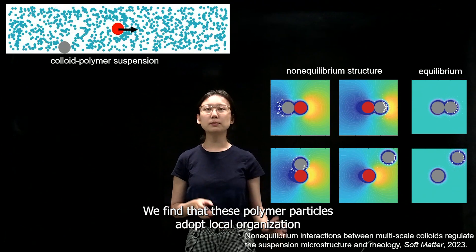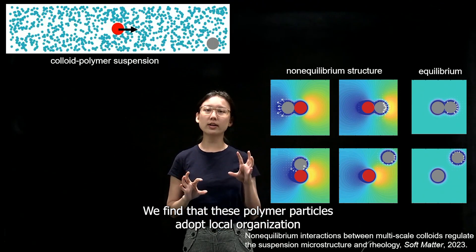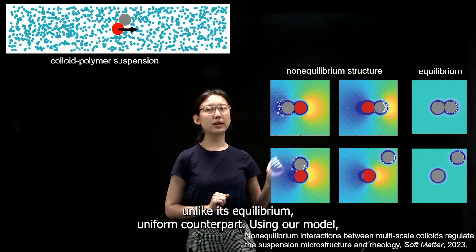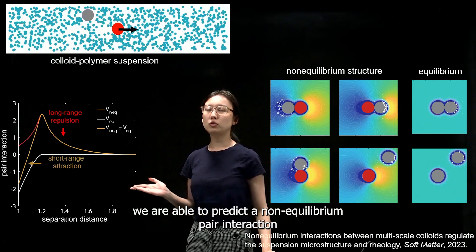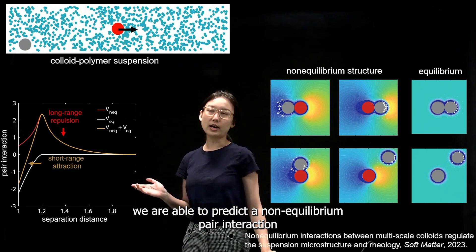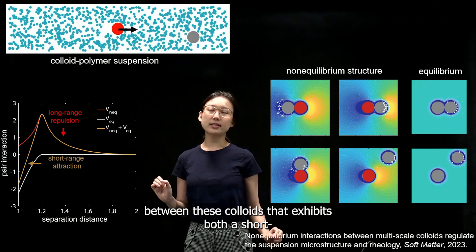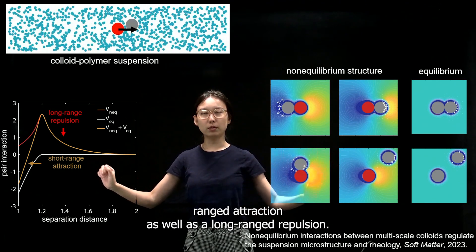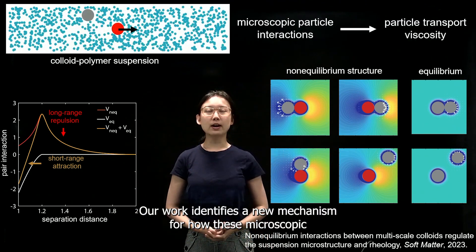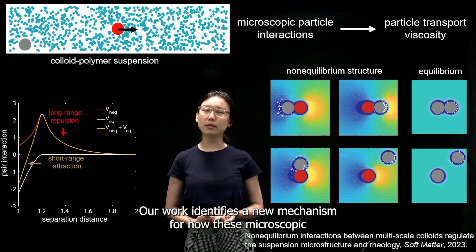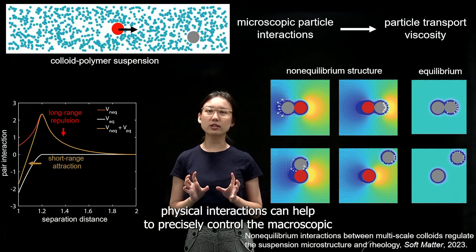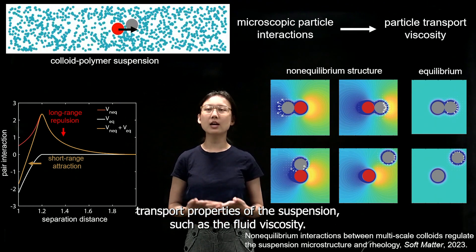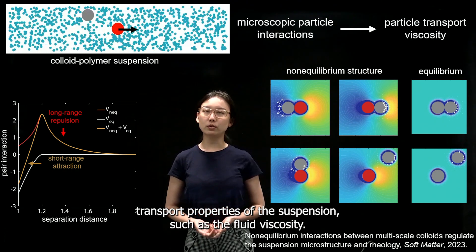We find that these polymer particles adopt local organization in this dynamic setting, unlike their equilibrium uniform counterparts. Using our model, we are able to predict a non-equilibrium pair interaction between these colloids that exhibits both a short-range attraction as well as a long-range repulsion. Our work identifies a new mechanism for how these microscopic physical interactions can help to precisely control the macroscopic transport properties of the suspension, such as the fluid viscosity.